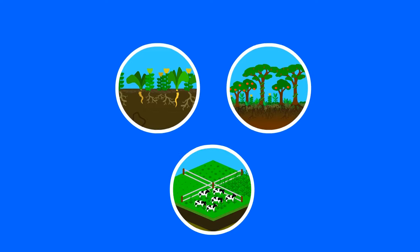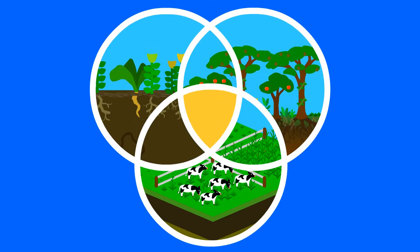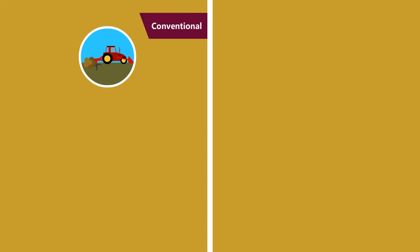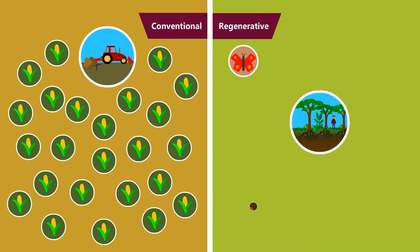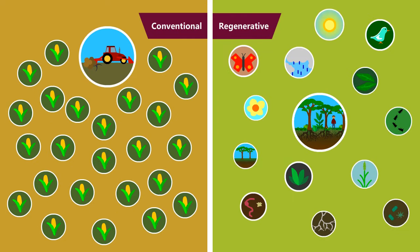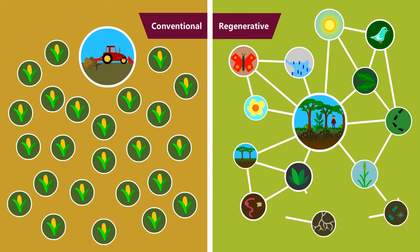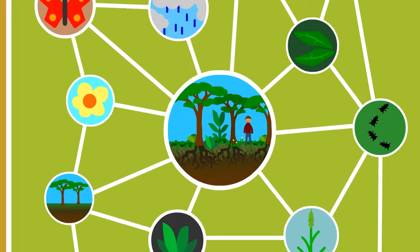These three examples of regenerative agriculture, plus all the rest of them, all have something in common. Whereas in conventional agriculture, you seek to create as many of one thing as possible, in regenerative agriculture, you seek to create as many relationships between things as possible. You are one of those things.